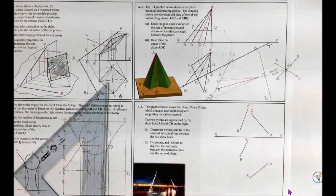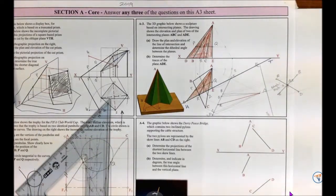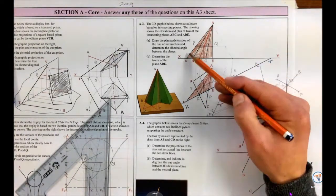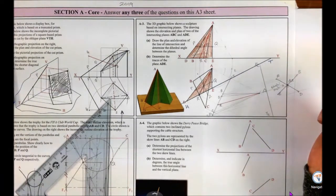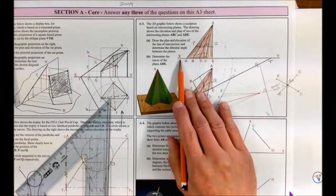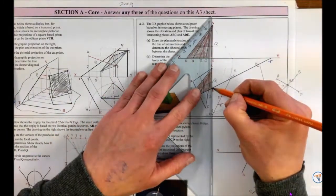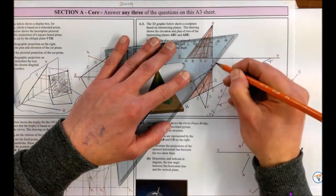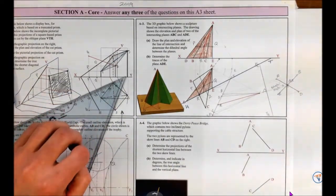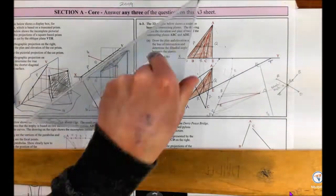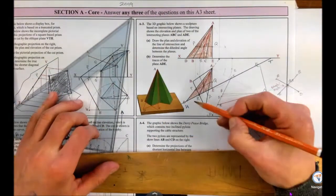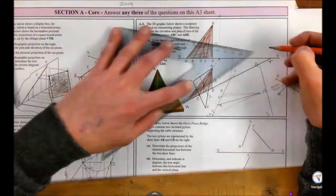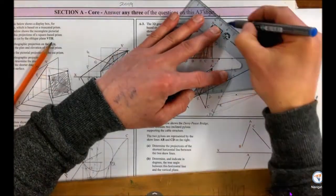I've just coloured in the plane so it makes a little more sense — don't do that yourself, because you're covering up your construction lines. You've got your plane ADE in plan and ADE in elevation. If I want to find a point on the vertical trace, I basically draw one of the lines to hit the vertical plane. The vertical plane in plan view is the XY line. I can take either line AD or AE — I'll take AD. I extend it to hit the vertical plane, find the same point in elevation, take that point up, and extend AD in elevation. That gives me my vertical trace — make sure you label it VT. That is that question done.